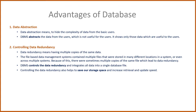Next is controlling data redundancy. Data redundancy means having multiple copies of the same data. File-based data management systems contained multiple files stored in many different locations in a system, or even across multiple systems. Because of this, there were sometimes multiple copies of the same file, which led to data redundancy. This is prevented in a database — DBMS controls the data redundancy and integrates all data into a single database file.